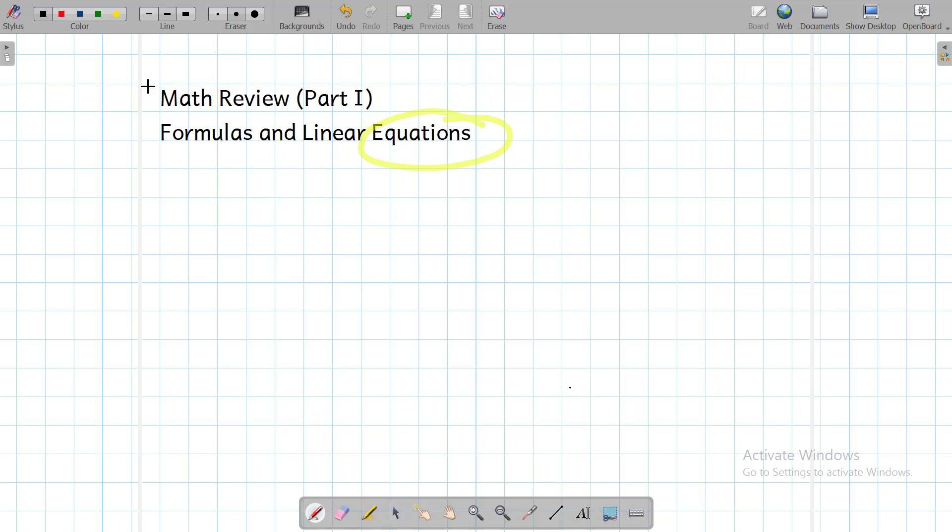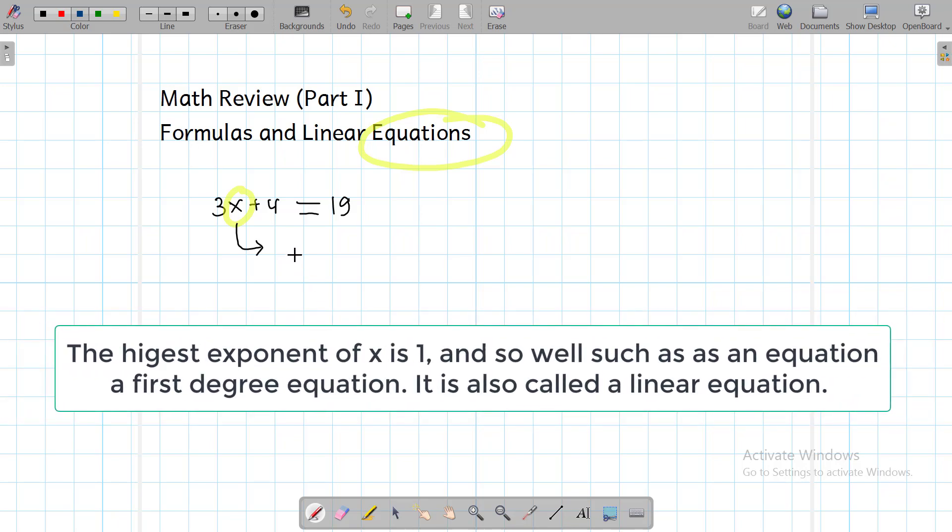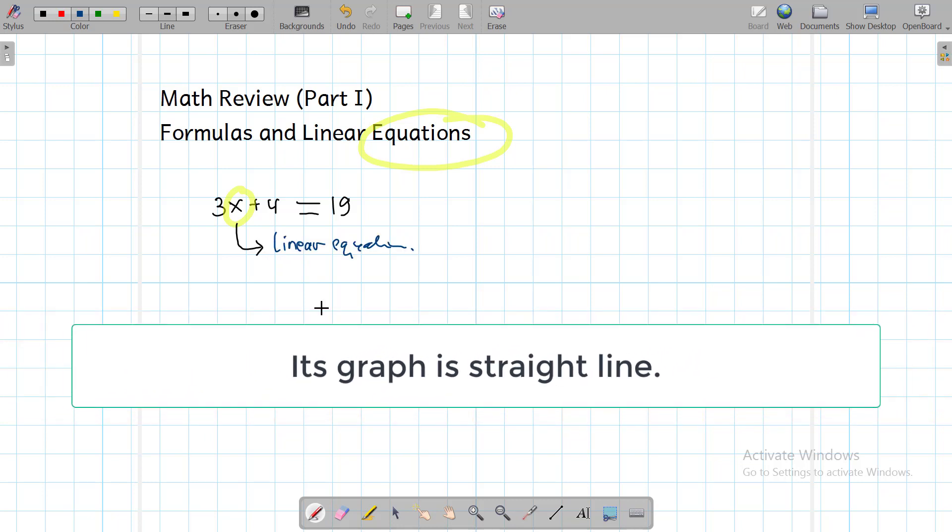Usually we use a symbol like this. And why linear equation? I would like to give you an example. I have 3x plus 4 equals 19. It's called a linear equation because the highest exponent of x in the equation is 1, and so we call such an equation a first degree equation. It is also called a linear equation, and its graph is a straight line.